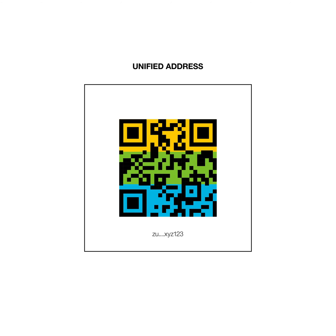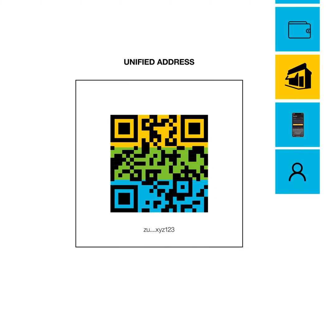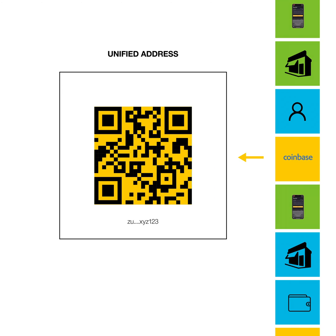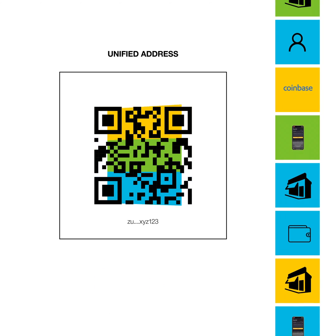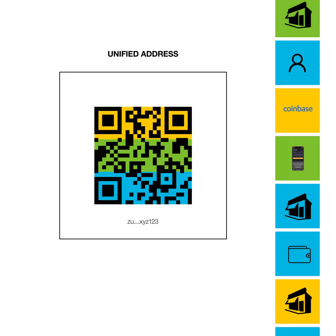If your wallet supports it, anything you receive to this address can be shielded automatically into the latest shielded pool, regardless of what kind of wallet sent it. When you send ZEC from a supporting wallet, your address will remain shielded even if the receiver only supports transparent addresses.